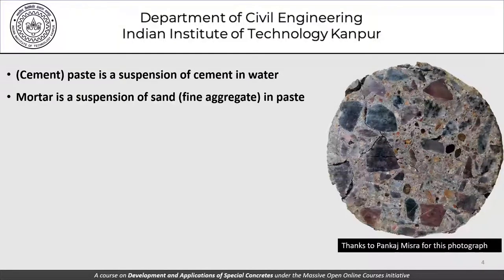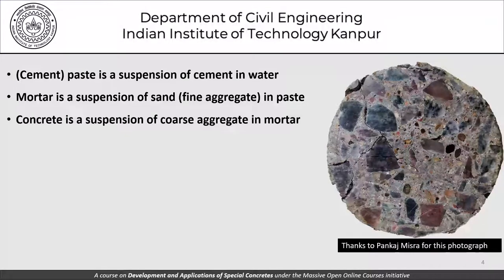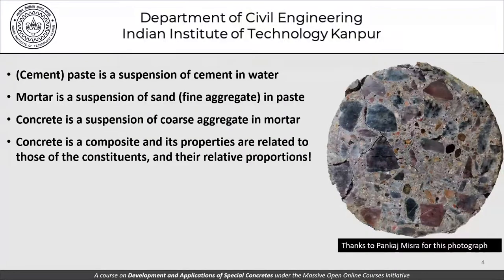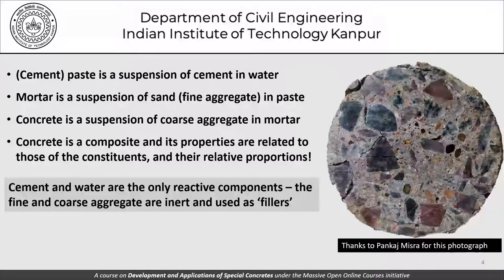The suspension model: cement paste is a suspension of cement in water, mortar is a suspension of sand in paste, and concrete is a suspension of coarse aggregate in mortar. Concrete is a composite — a three-phase composite — and its properties are related to those of its constituents and their relative proportions. Cement and water are the only reactive components; fine and coarse aggregates are essentially inert filler material.